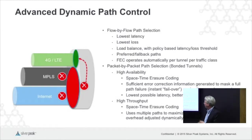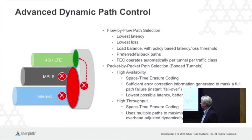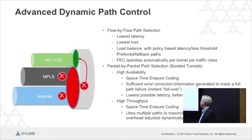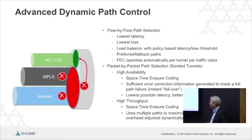With packet-by-packet, what we're doing is taking, say, a pair of paths — MPLS and internet in this example — and bonding them together, like the way link aggregation works. If one of them fails, that's fine. If both of them fail, we can fall back to LTE.